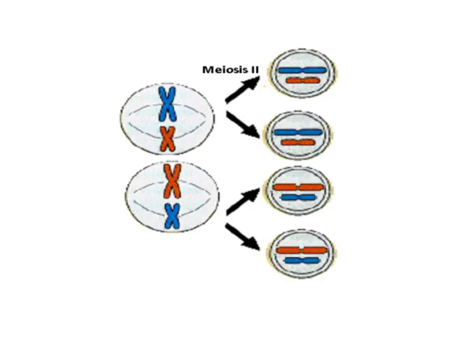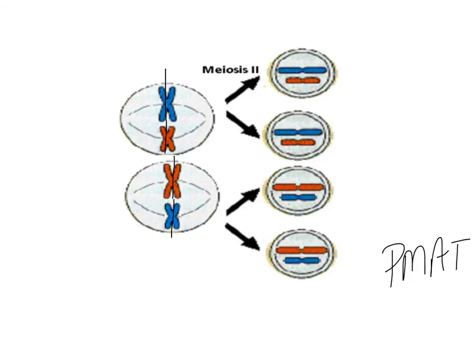During meiosis II, just like in meiosis I, we're going to have a PMAT situation — prophase, metaphase, anaphase, telophase. What we're doing here is taking these chromosomes, these sister chromatids, and splitting them apart. We end up with four haploid cells. The DNA had already been replicated, and we're going to separate out those double-stranded chromosomes.